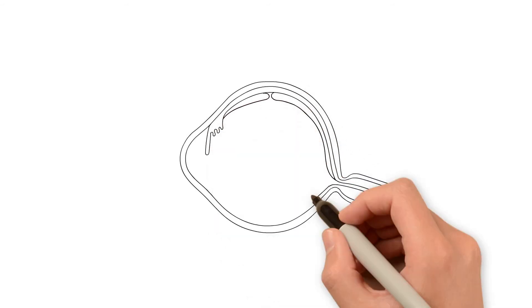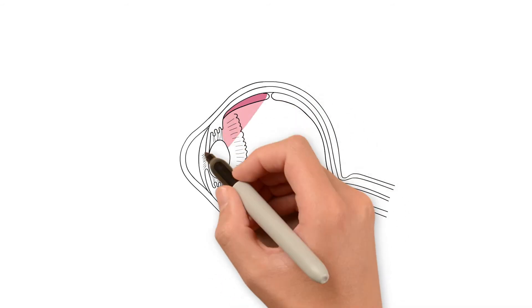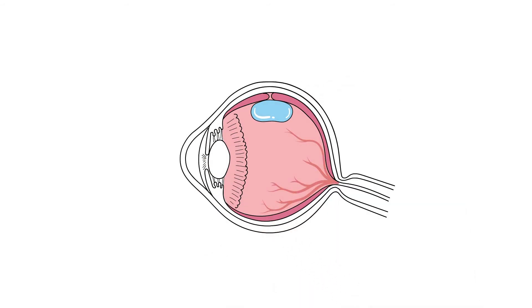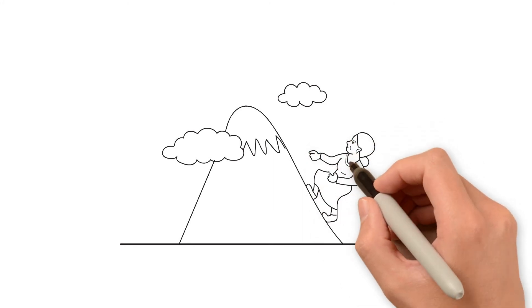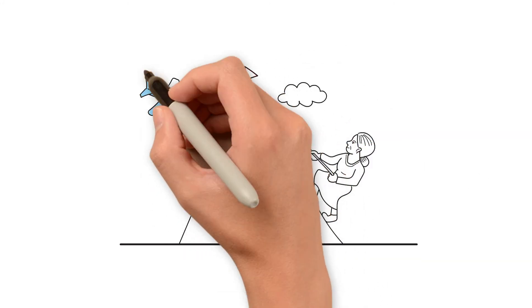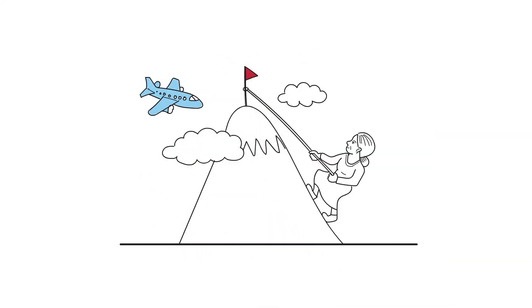The gas bubble will limit the vision in your eye, but eventually the bubble will naturally reabsorb and get smaller on its own until it disappears. You cannot fly in a plane while the gas bubble is in your eye. You must also avoid rapidly going to high altitudes.